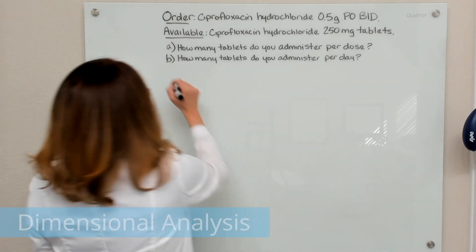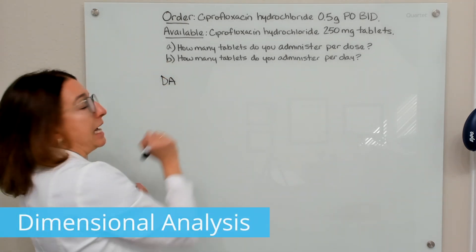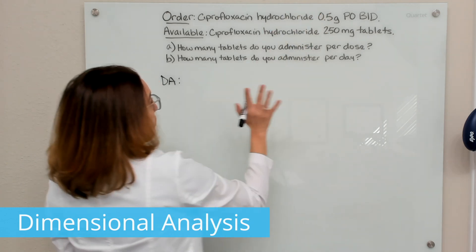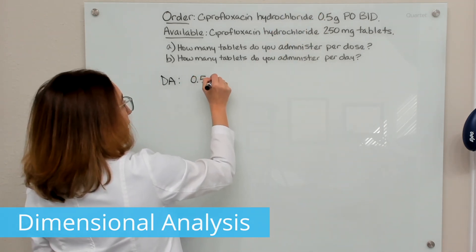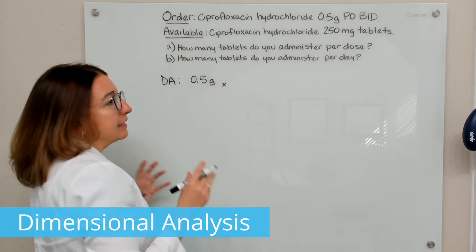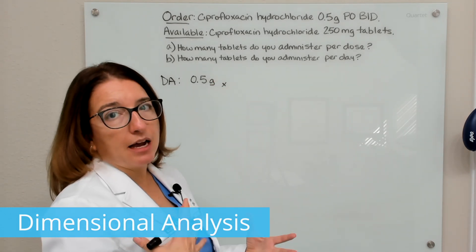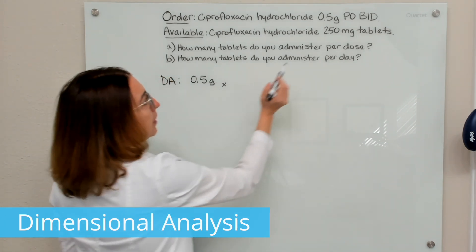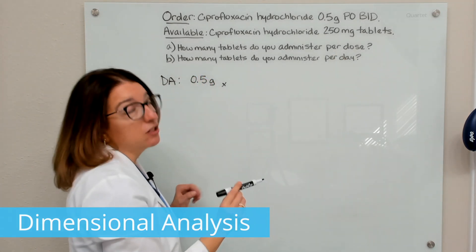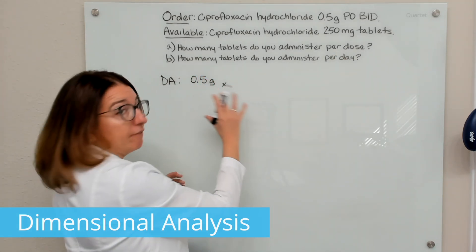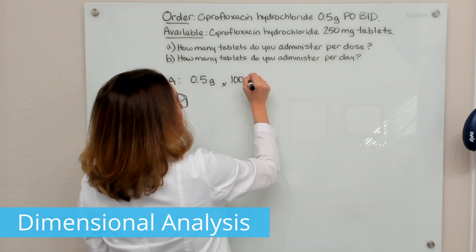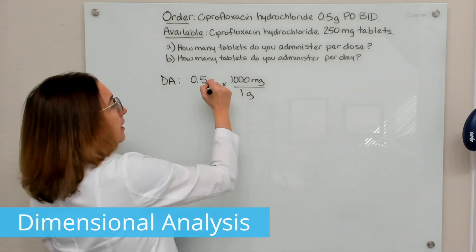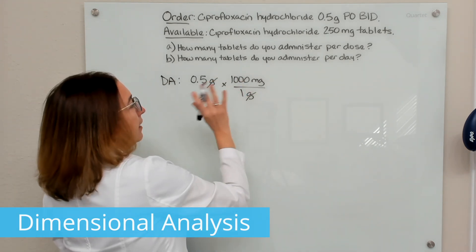Let's first solve it with dimensional analysis. With dimensional analysis, I start by putting down what is ordered, so what is ordered is 0.5 grams. Now I check to see if I need to multiply times any conversion factors. What's ordered is in grams, but what I have available is in milligrams, so I do need to multiply times a conversion factor. I'm going to multiply times this conversion factor: one gram equals 1,000 milligrams, and my grams will cross off, and I'm left with milligrams.